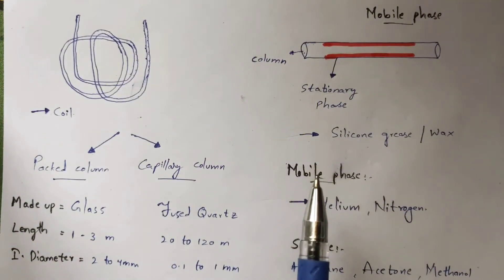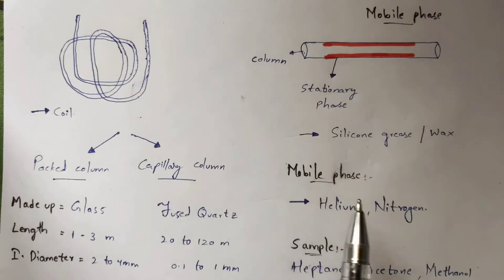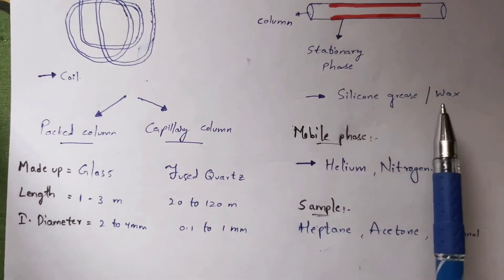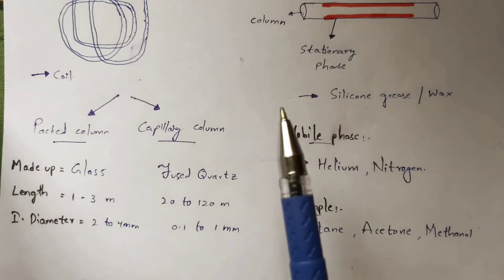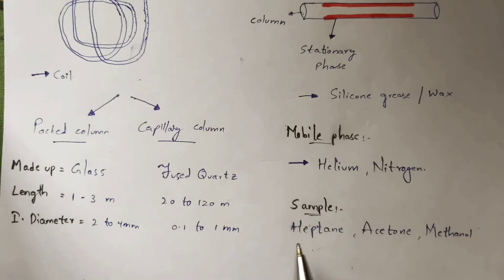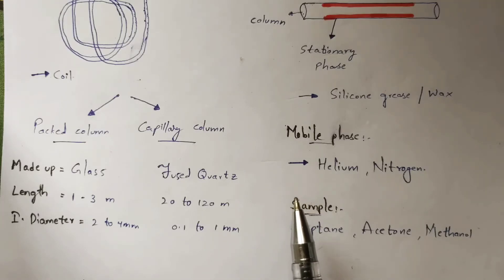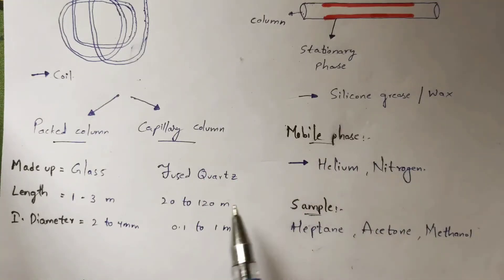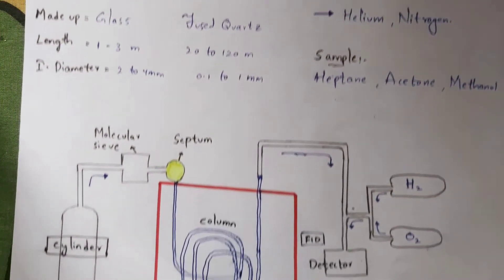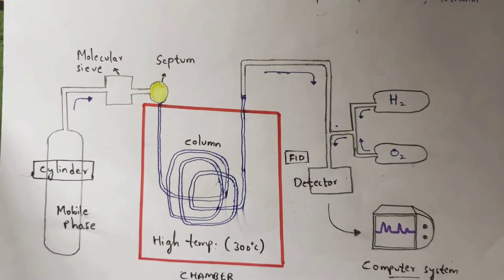The mobile phase is a gas — generally helium or nitrogen. You will take a sample of volatile compounds and mix it with solvents like heptane, acetone, and methanol. That will lead to proper separation of the molecules and a proper gas chromatography process.